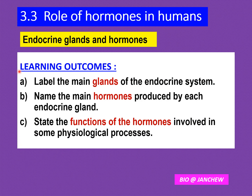The learning outcomes for this subtopic on endocrine glands and hormones are as follows: first, we must be able to label the main glands of the endocrine system if given a diagram; secondly, name the main hormones produced by each endocrine gland; and thirdly, state the functions of the hormones involved in some physiological processes.